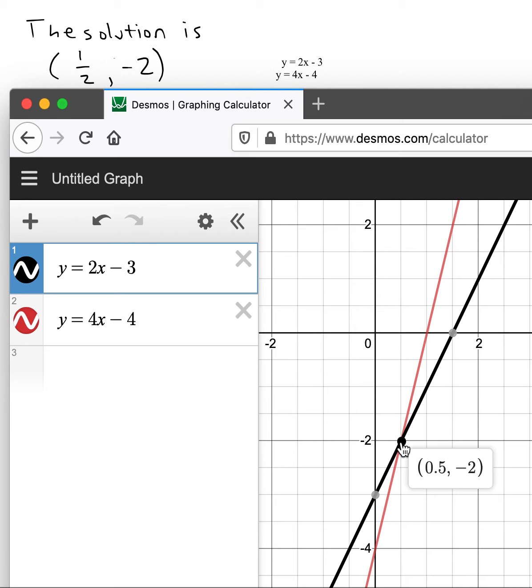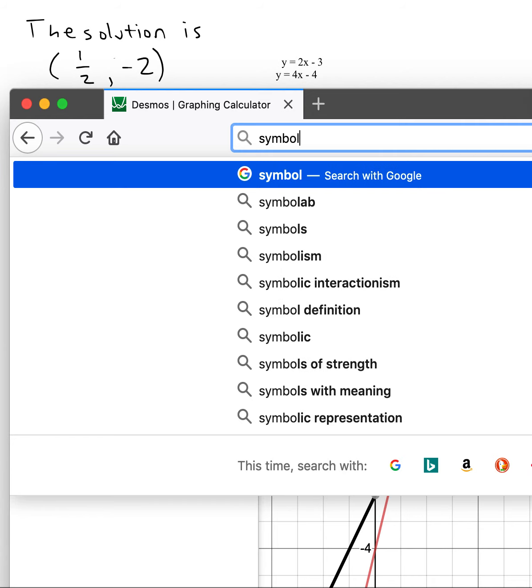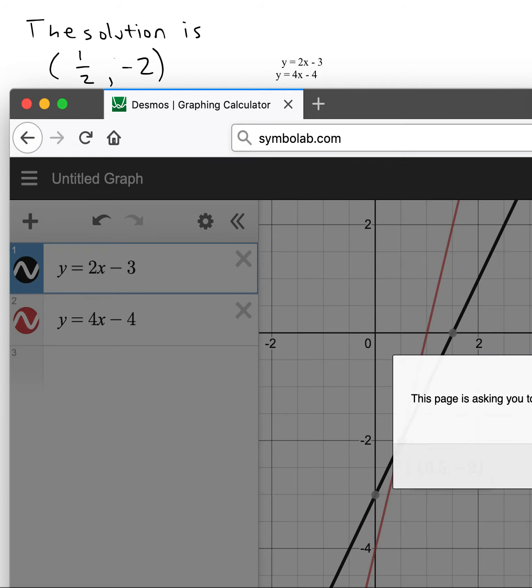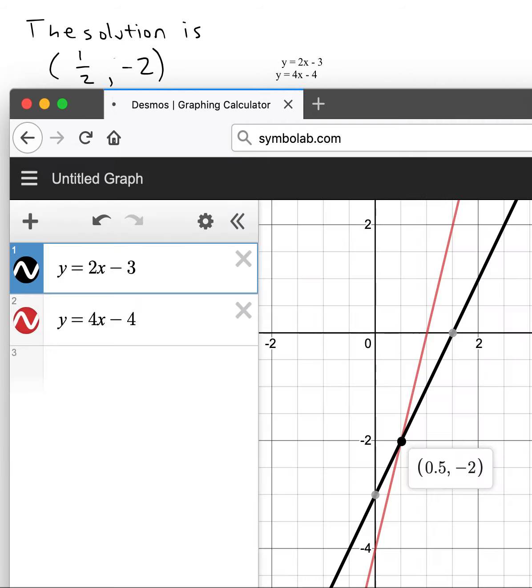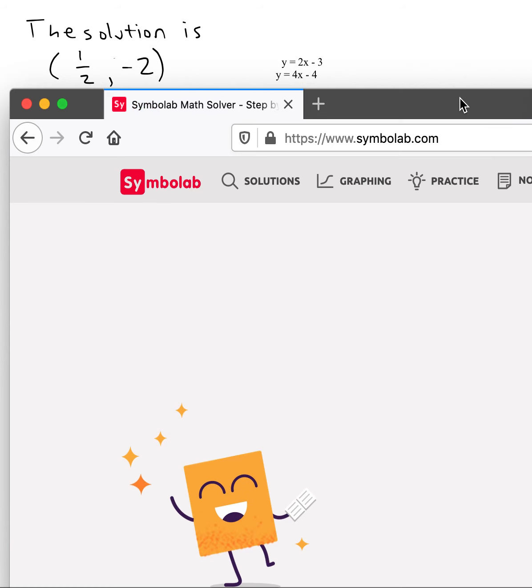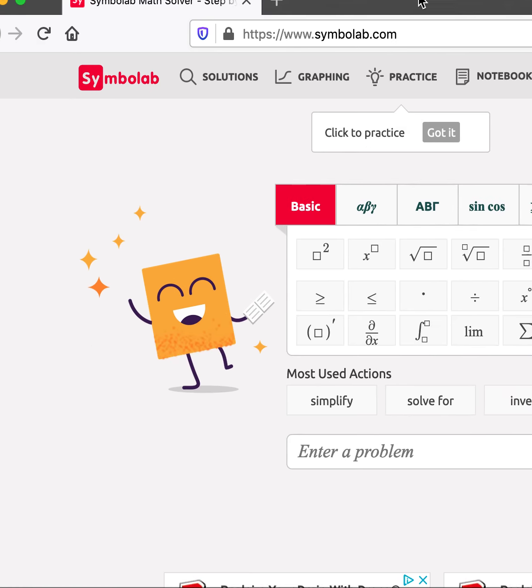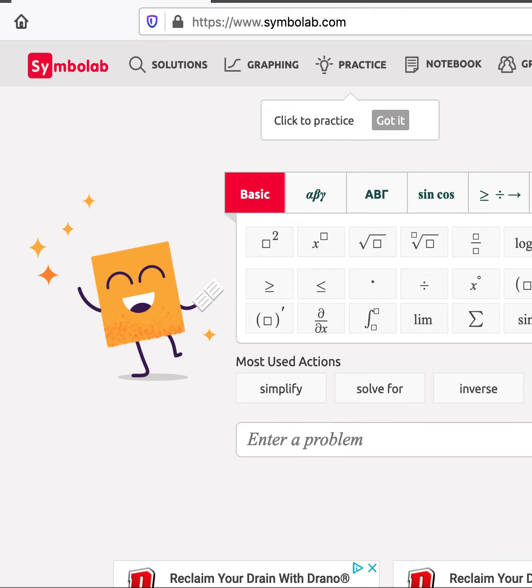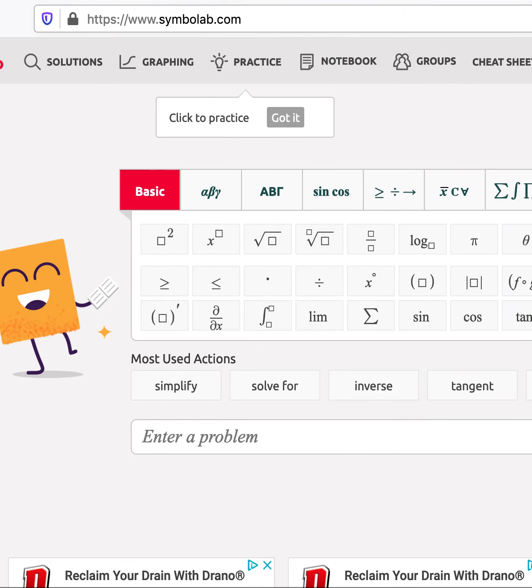And there we go. Now there's an online tool that you can use for solving equations as well to check your work. It's called Symbolab dot com. On Symbolab dot com you can solve a system of equations.